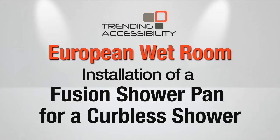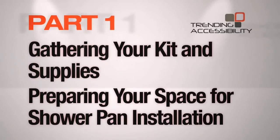Trending Accessibility welcomes you to a step-by-step installation of a European wet room with a curbless, barrier-free shower. Part 1: Gathering your kit and supplies, and preparing your space for shower pan installation.